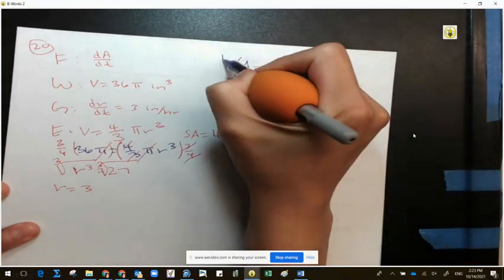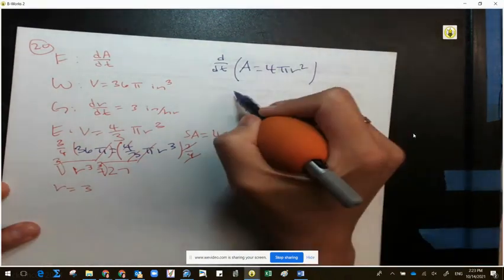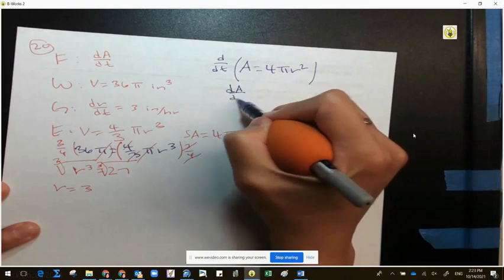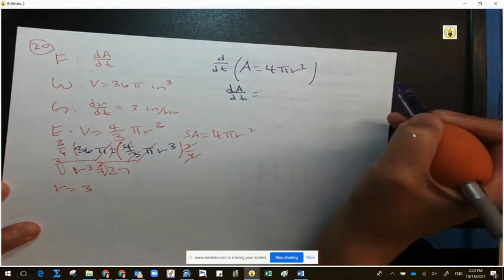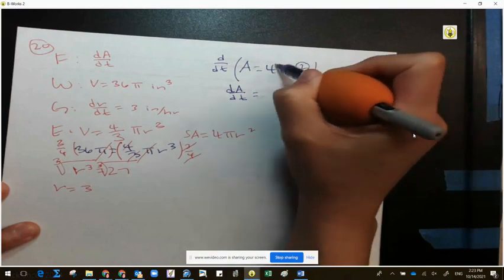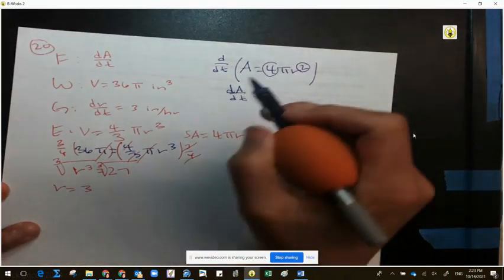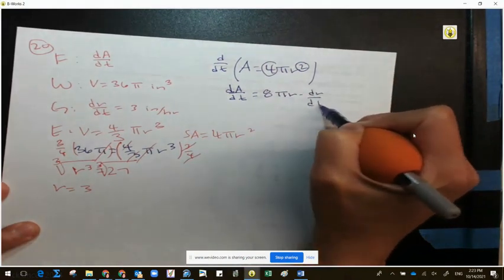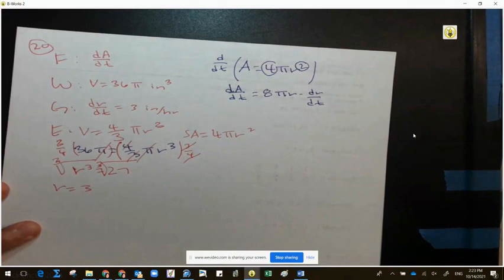Derived with respect to t, what's the derivative of A? dA over dt. What's the derivative of 4 pi r squared? 8 pi r, and we have dr over dt.